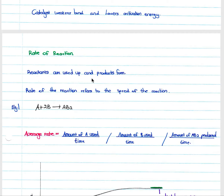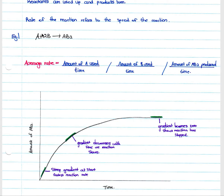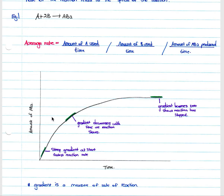The rate of reaction refers to the speed at which reactants are used up and products are formed. For the reaction A + 2B → AB₂, we can measure the average rate as the amount of A used, B used, or AB₂ produced over time. Plotting AB₂ produced, we see a steep gradient at the start due to the fastest reaction rate — there are the greatest number of A and B particles and therefore the most effective collisions.